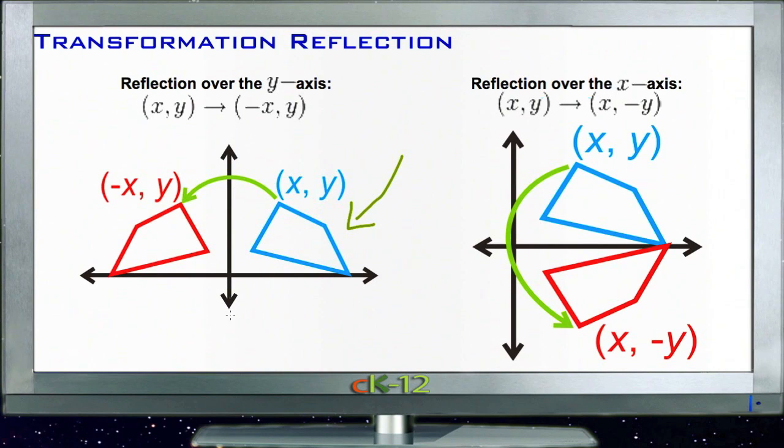We imagine that the y-axis represents a mirror. If we look at the new image, we call it x prime, y prime.